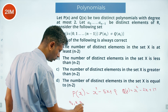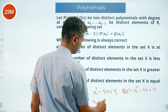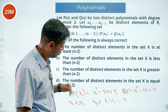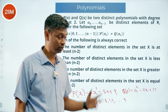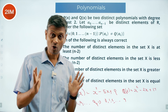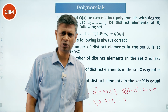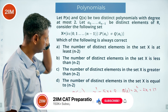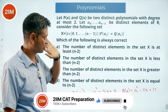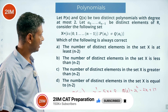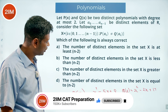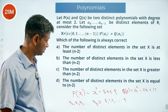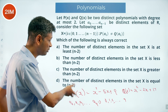So suppose n = 10. I have 10 terms: a₀ to a₉, chosen as distinct real numbers — say 0, 1, 2, ..., 9. Then X counts those indices where P(aᵢ) ≠ Q(aᵢ). The question asks: is the number of distinct elements in X at least n-2, less than n-2, greater than n-2, or equal to n-2?